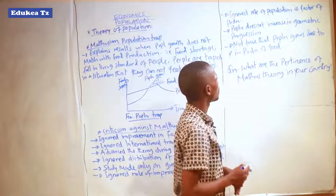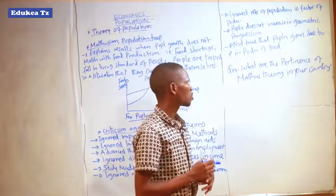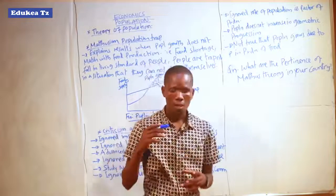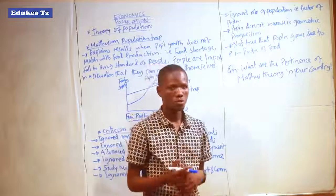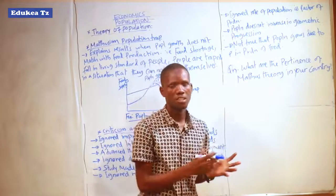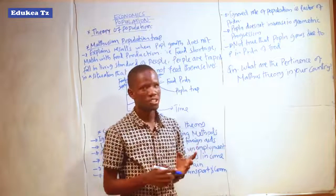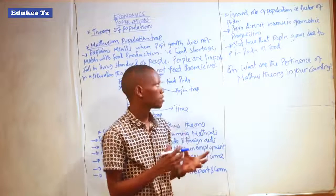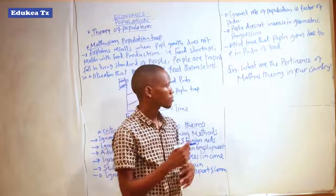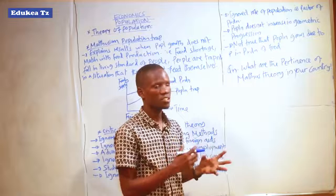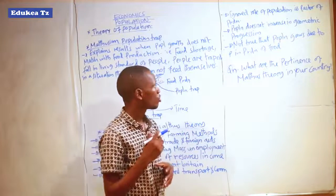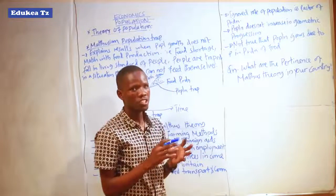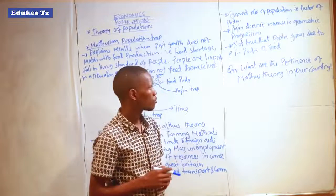It is also not true that population grows solely due to increases in food production. There are other factors that lead to population increase, such as improvement in welfare, improvement in healthcare, marriage practices, and religious practices like polygamy in different tribes. These are factors that can lead to population increase beyond what Malthus accounted for in his theory.